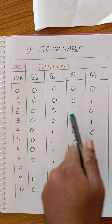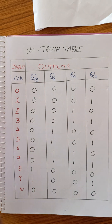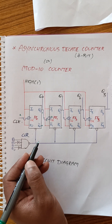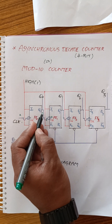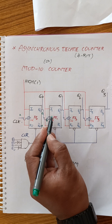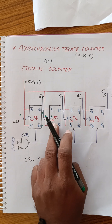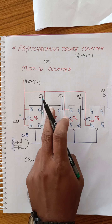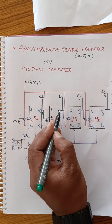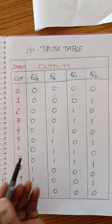When the second clock pulse is applied: the first flip-flop toggles from 1 to 0, and Q0 goes from 1 back to 0. This falling edge triggers the second flip-flop. The second flip-flop is in on condition — JK connected to high level — so it is in toggle mode. The second flip-flop toggles from 0 to 1. Q1 becomes 1.